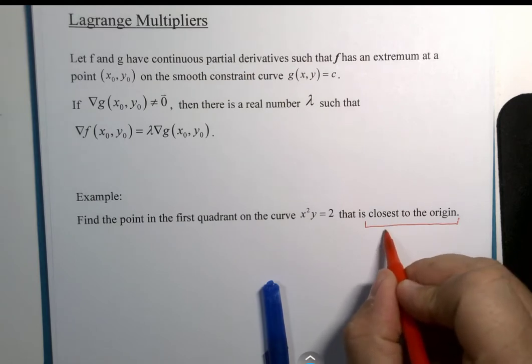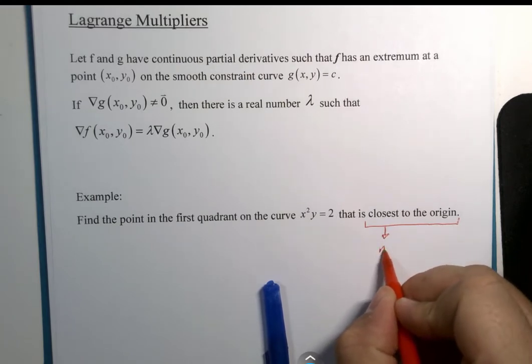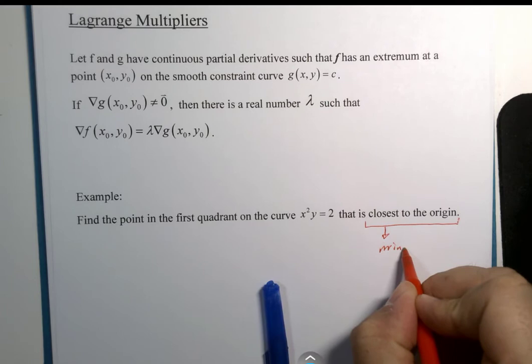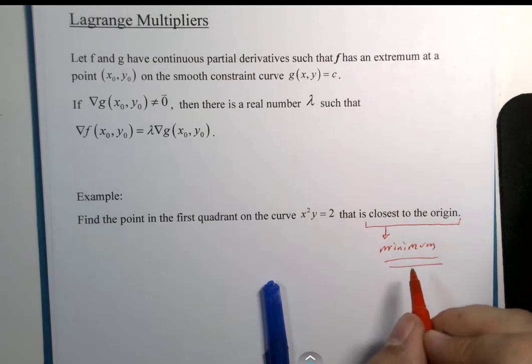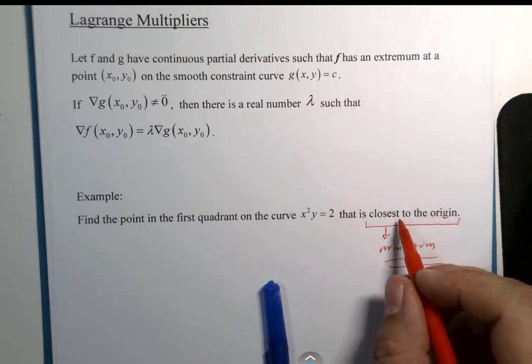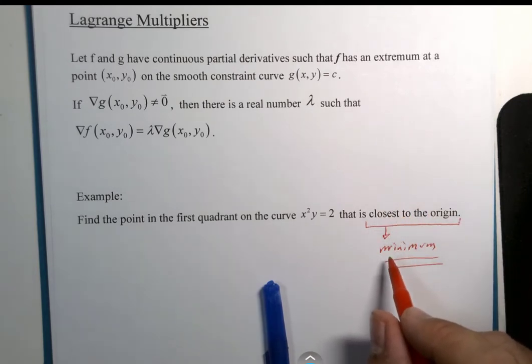Now, closest to the origin implies some form of a minimum. But it doesn't give us a function. That's what looks like it's going to happen.